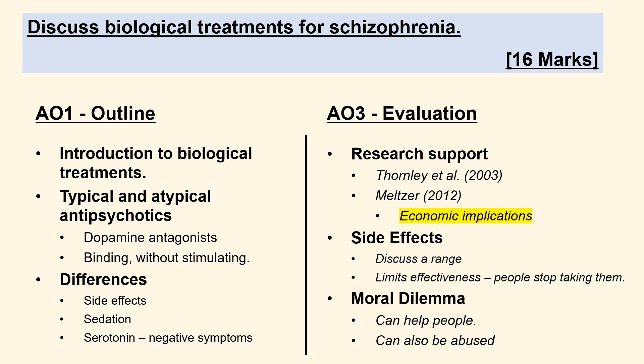In my AO3, I'm going to use three main evaluation points: the research support, followed by some talk about the side effects and why they make the drugs less effective. I'll then finish off with a discussion point on the moral dilemmas of using antipsychotic medication. I'm also going to squeeze a little economic implication point in there, because the examiner's report mentioned that anyone who attempted to do that in the exam didn't do it very well, and it's something they would have liked to have seen more of.